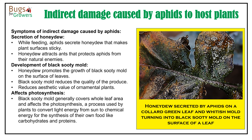In case of indirect damage, aphids secrete honeydew on the surface of plant parts that becomes sticky and non-edible. Honeydew also promotes the growth of black sooty mold on the surface of leaves, and this sooty mold affects the process of photosynthesis, which in turn reduces the ability of the plant to produce its own food, affecting plant growth. Black sooty mold also reduces the aesthetic value of many ornamental plants, causing huge economic losses to many nursery growers.